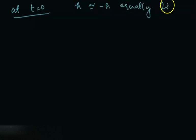Now consider a random walk which starts at time zero. It has jumps which are h or minus h equally likely.